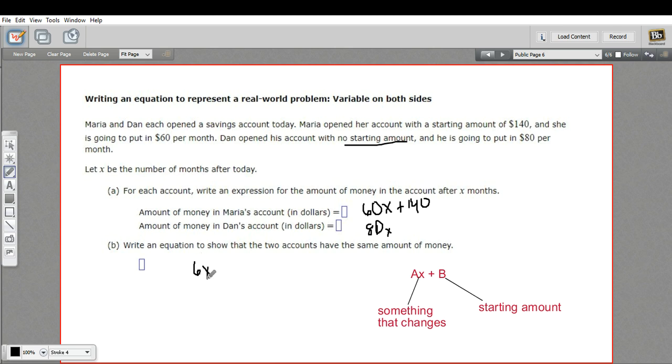So we could say 60X plus 140 equals 80X. And if you solved that for X, you would know at how many months do those two accounts have the same amount. So that's how to write an equation with variables on both sides that represents a real-world situation.